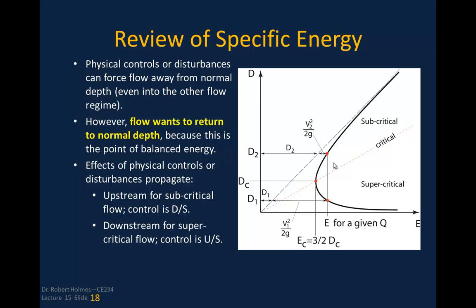Physical controls or disturbances can force flow away from normal depth; however, flow always wants to return to normal depth because this is the point of balanced energy. Effects of physical controls propagate upstream for subcritical flow and downstream for supercritical flow. In subcritical flow, the wave celerity (square root of gY) exceeds flow velocity, so disturbances can propagate upstream — creating backwater effects. In supercritical flow, the control is upstream and disturbances do not propagate upstream unless a backwater is created.